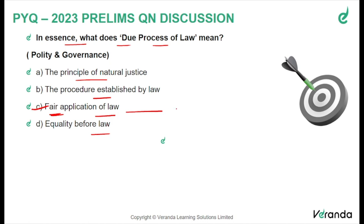You should understand that due process of law also states that without following the necessary legal procedures and receiving the necessary protection, a person cannot be deprived of their life, liberty, or even their property. The due process of law safeguards a person's rights and restricts the scope of the law. This question is asked to assess the basic conceptual understanding of candidates for the UPSC preliminary examination.